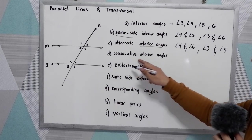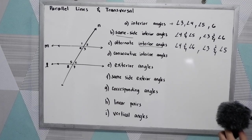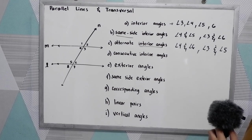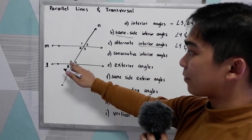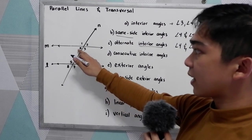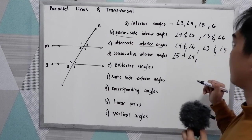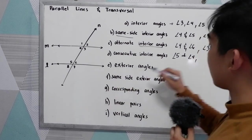Next, consecutive interior angles. These are the angles next to each other. Consecutive interior angles can be angle 5 and angle 4, or it can be angle 3 and angle 6.